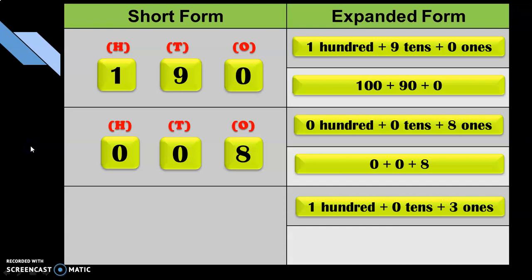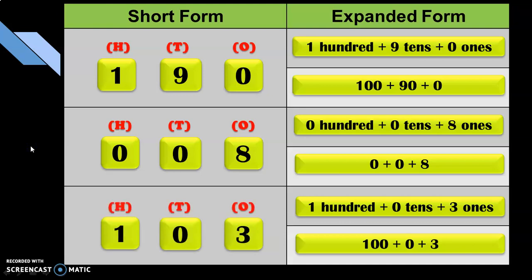Yet another way of questioning: give the expanded form 1 hundred + 0 tens + 3 ones. We could ask children to write the short form and also the other type of expanded form. The other expanded form is: 100 + 0 + 3. And the short form is 103 — 1 in the 100s, 0 in the 10s, and 3 in the 1s.